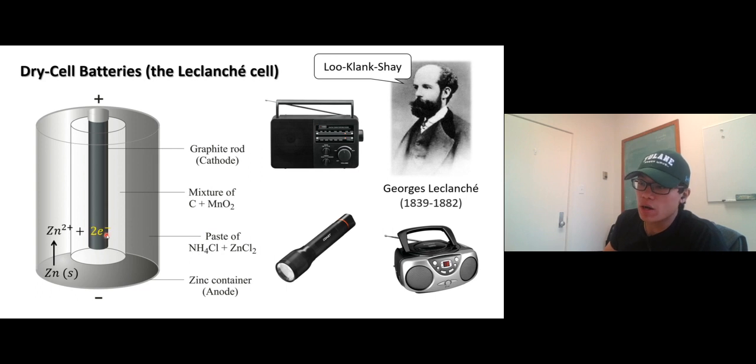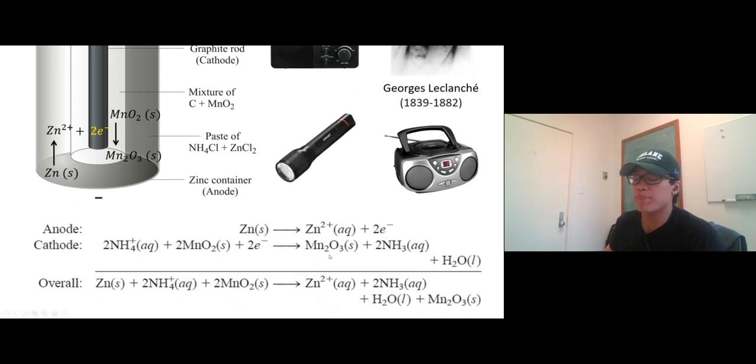So what happened is, same thing: zinc loses the electron, oxidation reaction; manganese dioxide takes the two electrons and undergoes a reduction reaction. You can write anode, cathode—I'm not gonna ask you to write it, I just wanna show you.